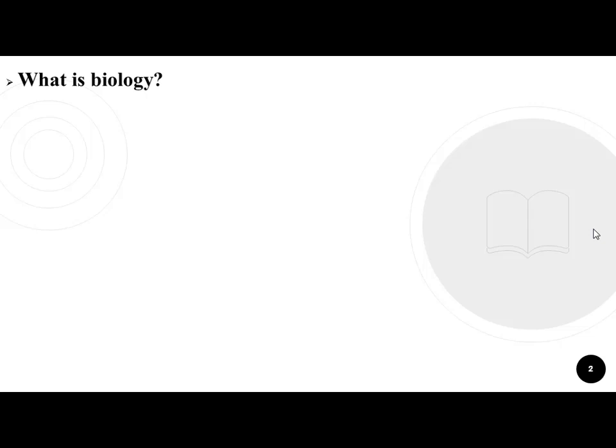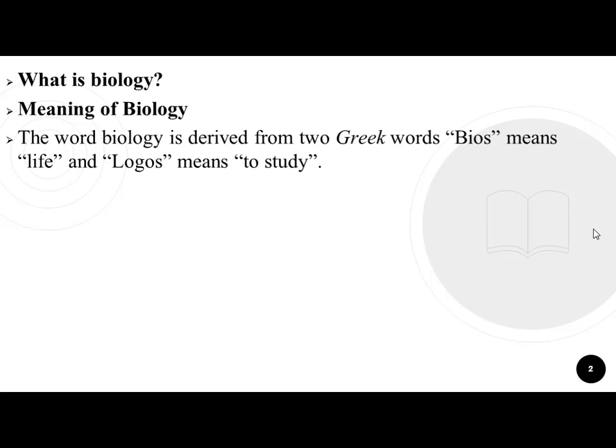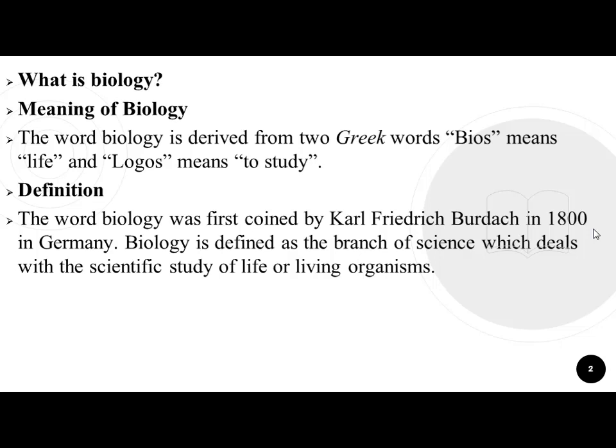Meaning of Biology: The word biology is derived from two Greek words — 'bios' means life and 'logos' means to study. The word biology was first coined by Karl Friedrich Burdach in 1800 in Germany. Biology is defined as the branch of science which deals with the scientific study of life and living organisms.